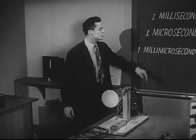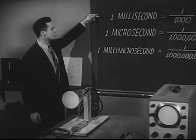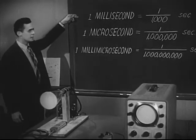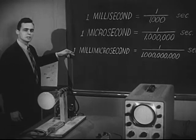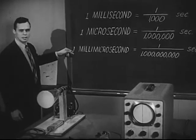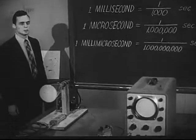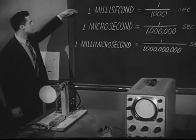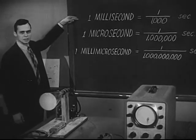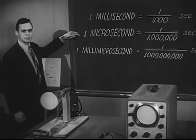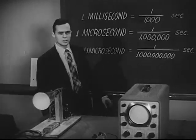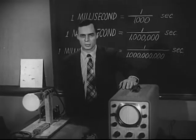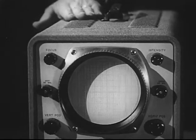As we continue to measure shorter and shorter times, it becomes more difficult to refer to them the usual way — nine ten-thousandths of a second, for example. So let's call a thousandth of a second a millisecond, a millionth of a second a microsecond, and a thousandth of a millionth of a second a millimicrosecond. Our photographic technique measured events in the millisecond range. Now let's study things that happen a thousand times faster, using the oscilloscope — a very common research tool.